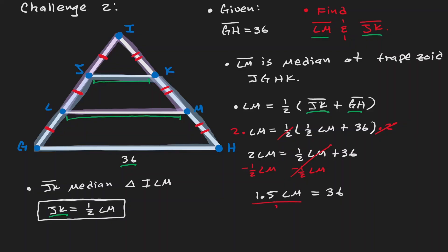So we have a result. LM is 24. So now we know the first part of our problem. Now, how can we find the value of JK?